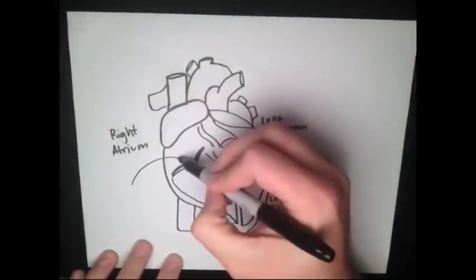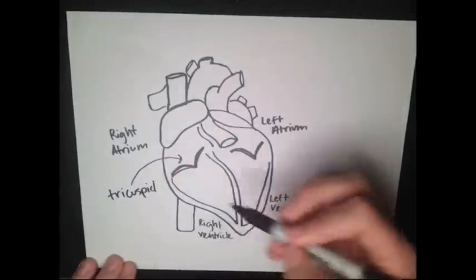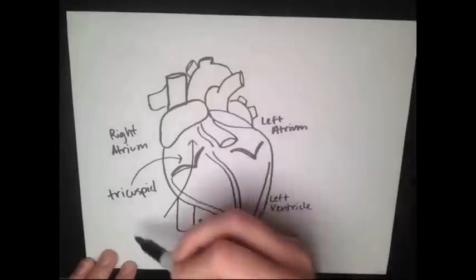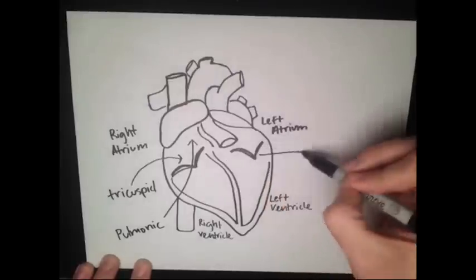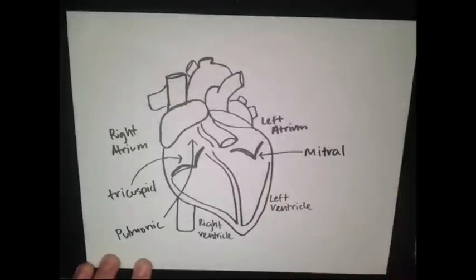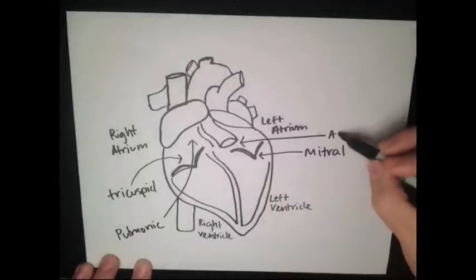These valves are the tricuspid in the right atrium, the pulmonic in the right ventricle, the mitral in the left atrium, and the aortic in the left ventricle.